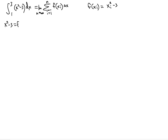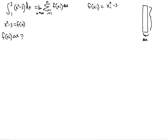Now we have to find what Δx is. When you're doing Riemann summation, you're talking about rectangles. If we draw one such rectangle, the width will be Δx and the length is going to be the function value, which is f(xᵢ). So f(xᵢ) times Δx equals area.